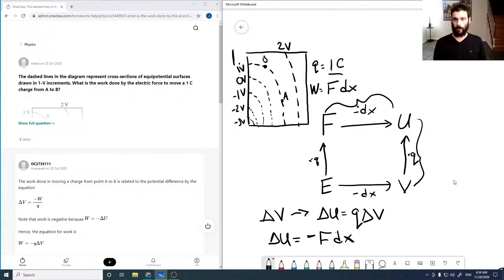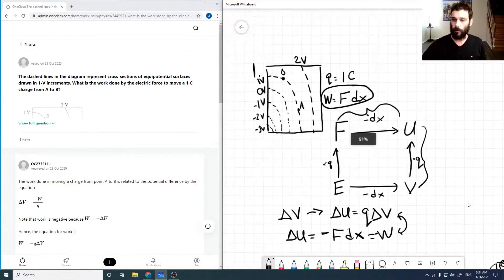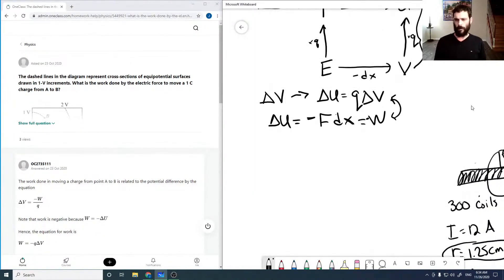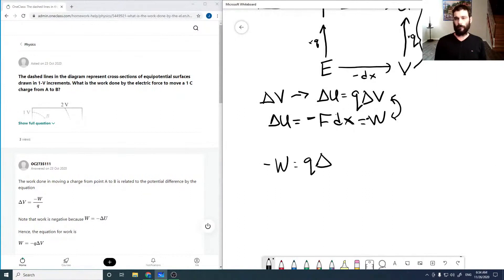And so comparing that to our expression above, then our change in energy is just our work, or the negative of our work, actually. And so that means the negative of our work relating these two expressions is just q delta V, and so our work is negative q delta V.